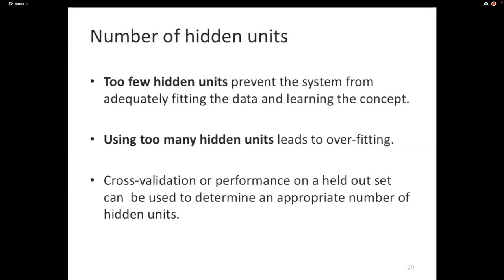Another hyperparameter is the number of hidden units. Too many hidden units leads to overfitting; too few leads to underfitting — your model can't accurately represent the concept. How do you know the right size? Use cross-validation or performance on a validation set. For neural networks, this answer — use validation — applies again and again for nearly every architecture design choice.